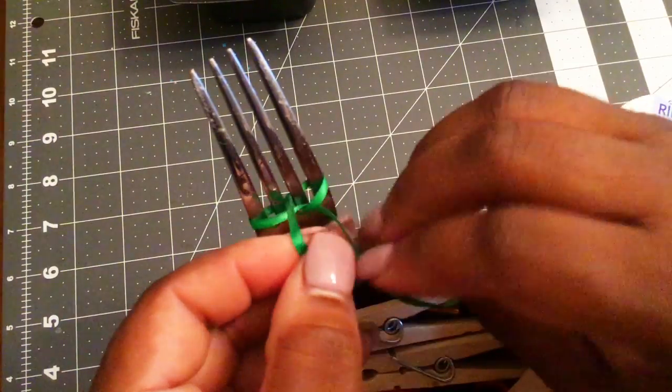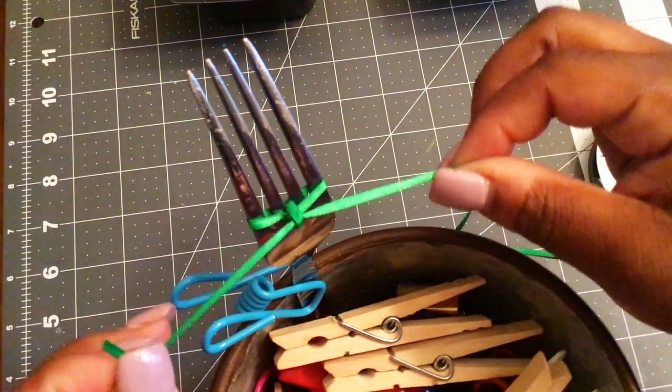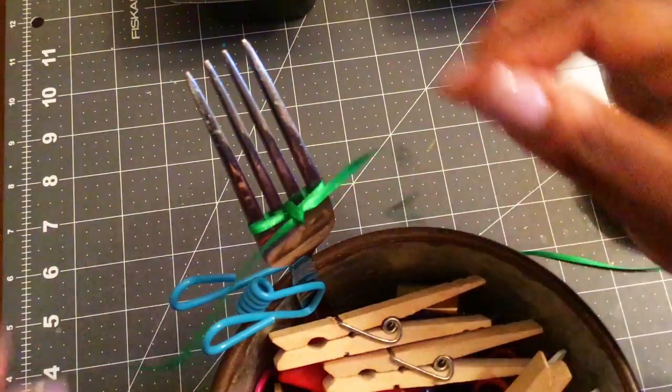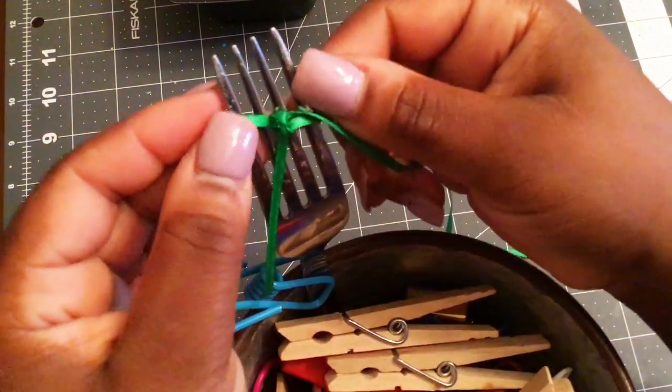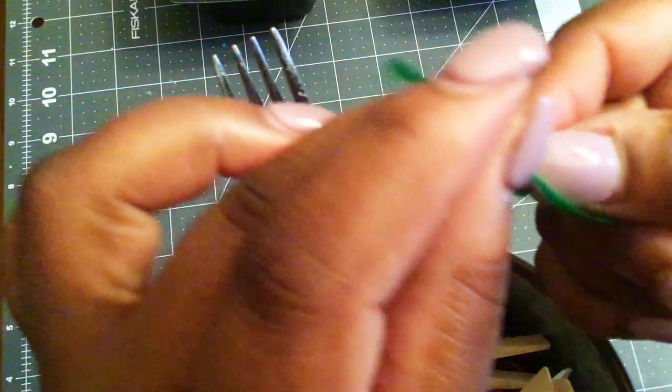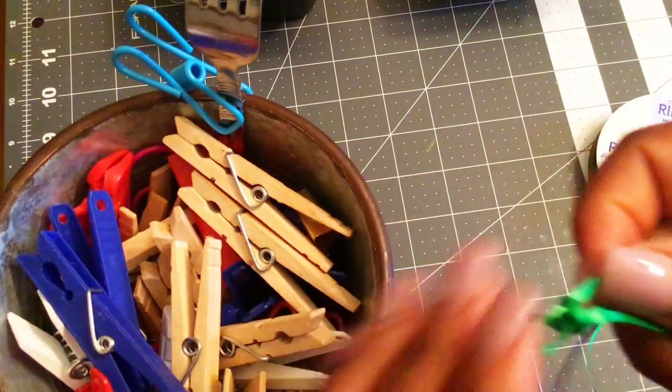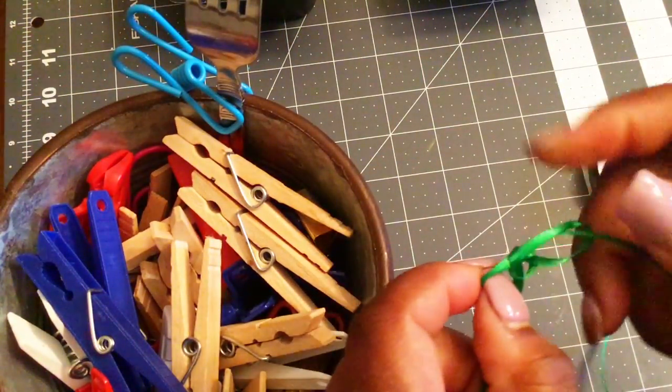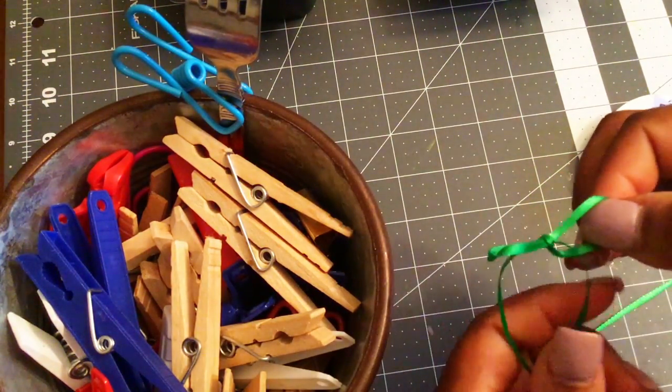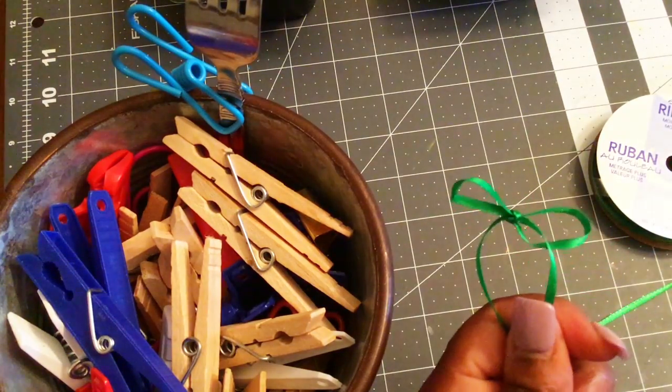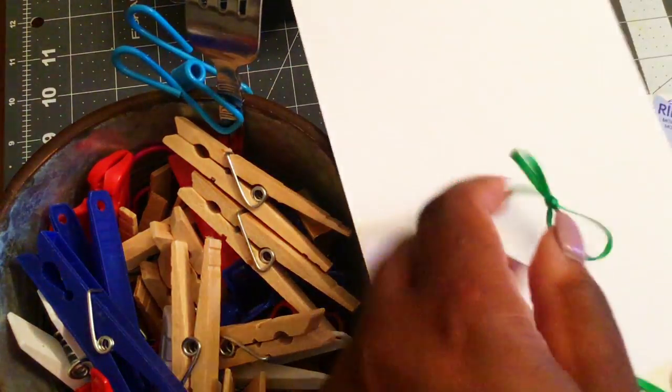And there's your bow. You can always manipulate the loops here while it's still on the fork. I've been just pulling it off and kind of working with my bow. Let's pull it tight, and there it is.